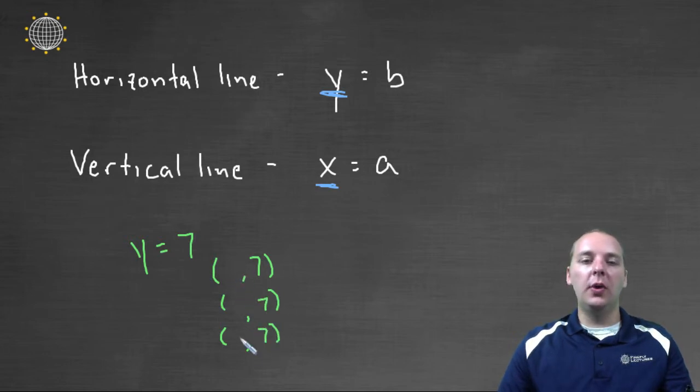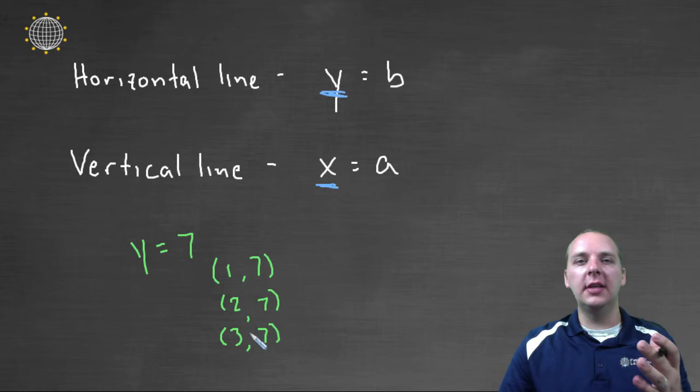And so no matter what the x is, the y will be seven. So if you had one seven, two seven, and three seven, for example. Just think in your mind, where is that on a graph?